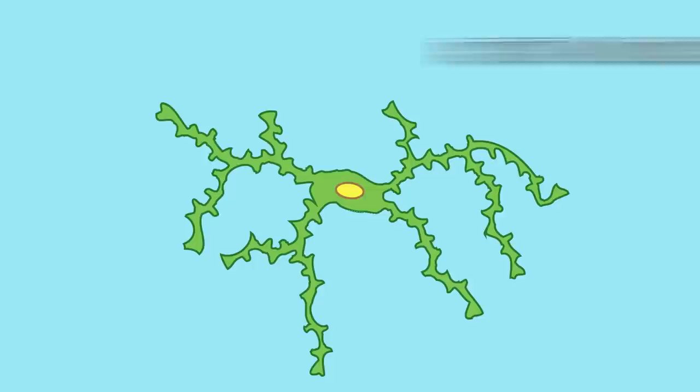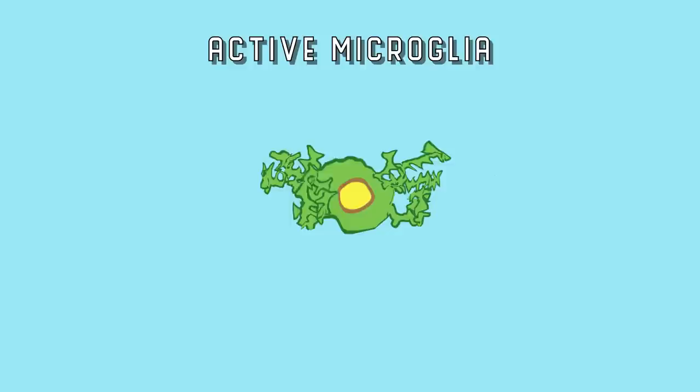These active microglia change their shape, pulling in their branches and becoming more bushy, and start to multiply to increase the number of microglia in the brain. They also release proteins, called cytokines, that make it easier for other immune cells, like T cells, to get into the brain to help deal with infections.